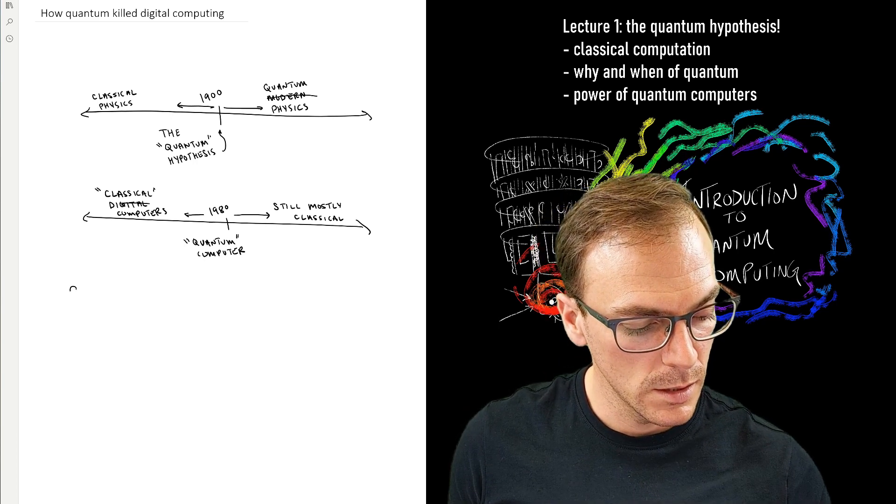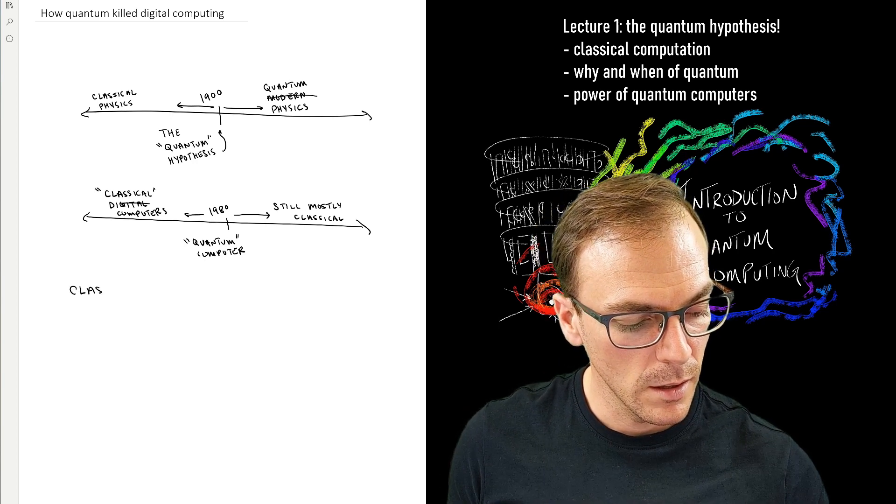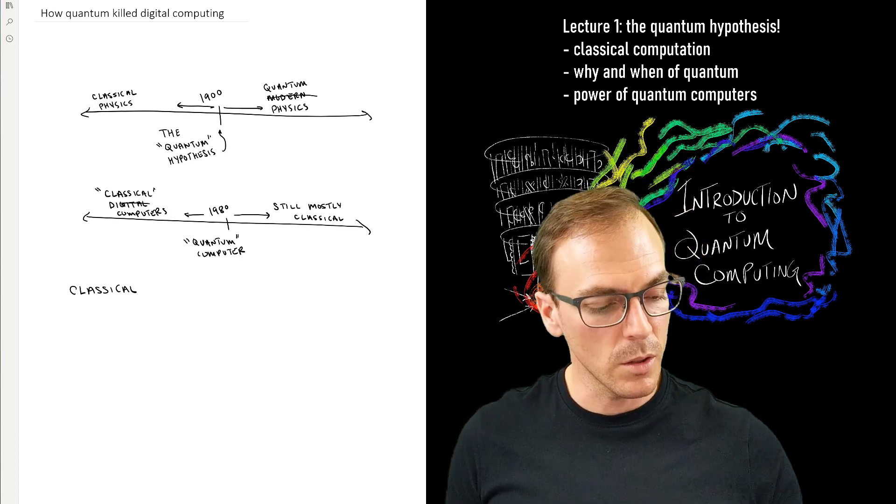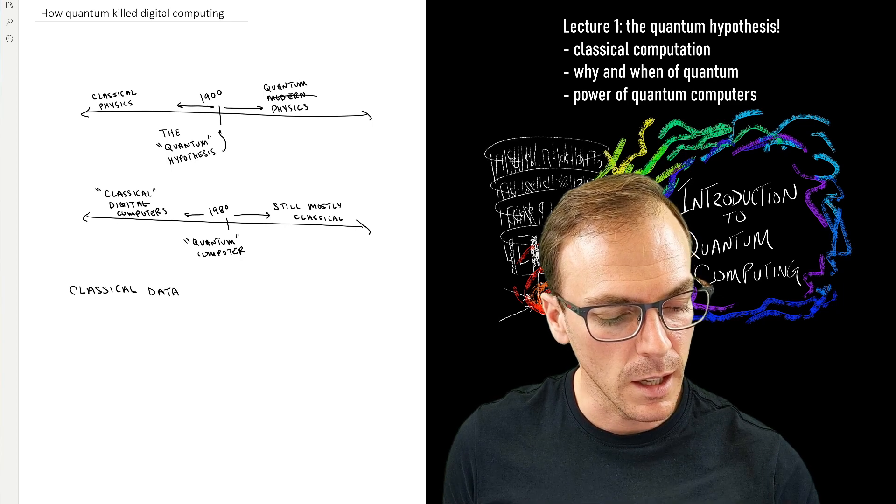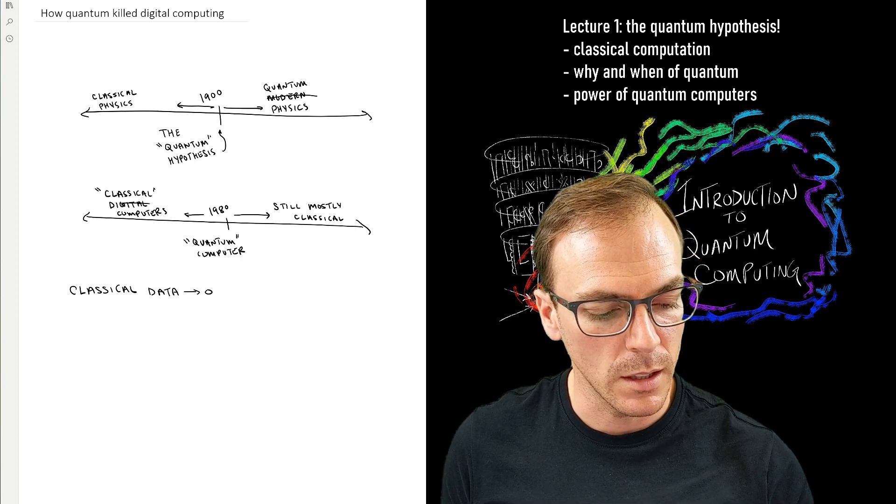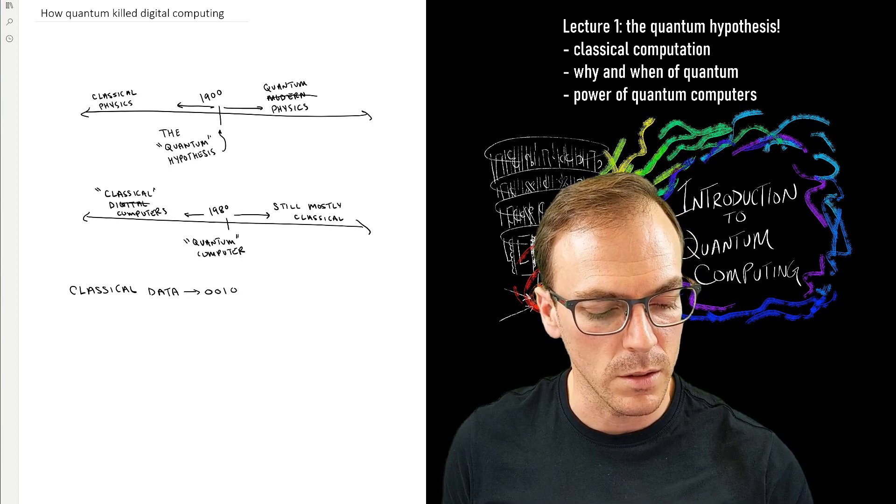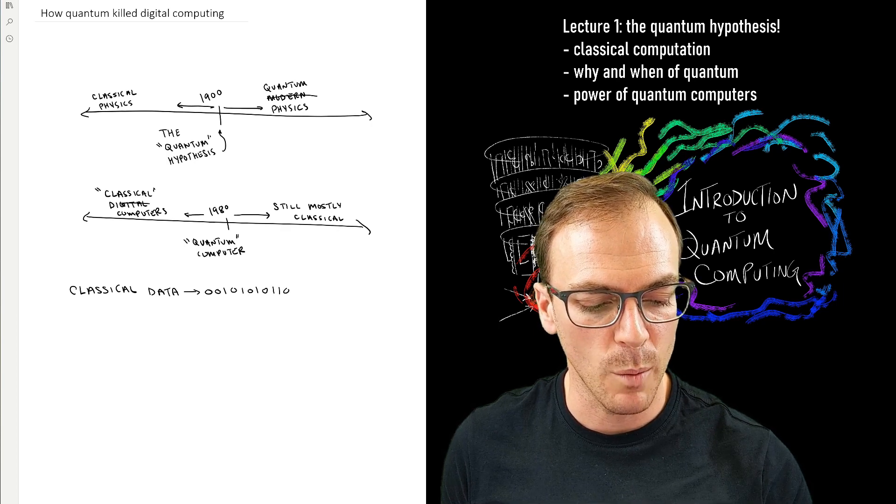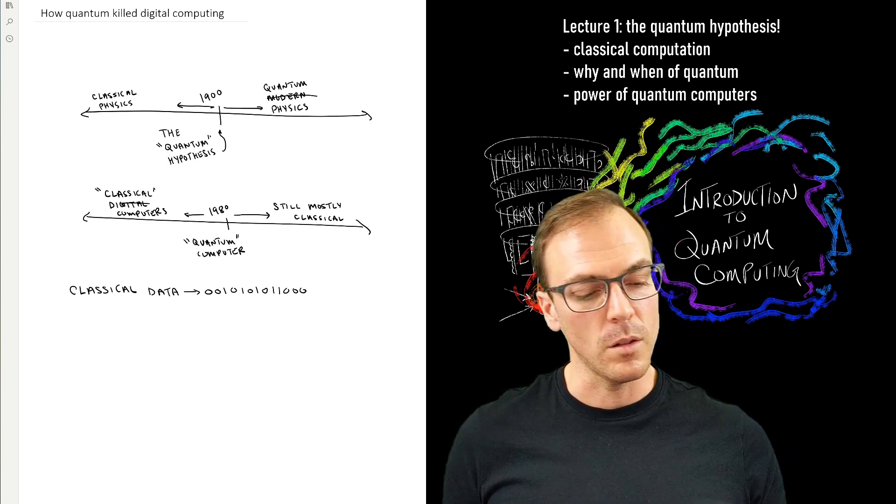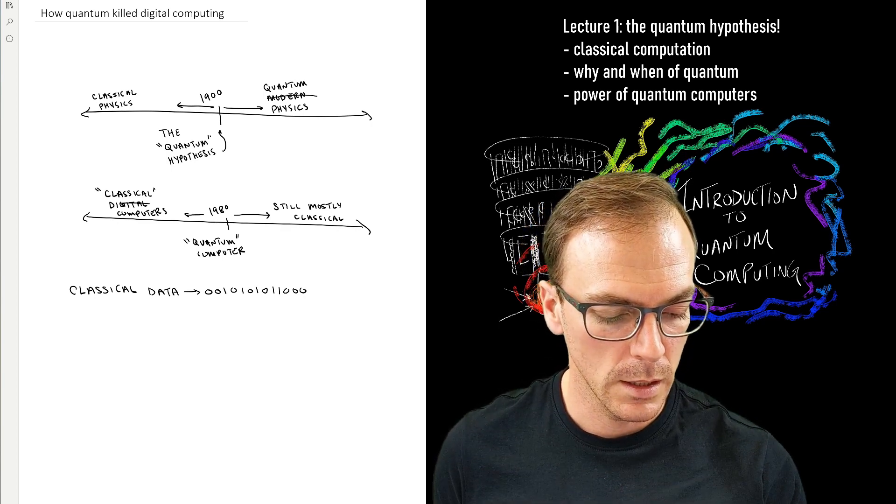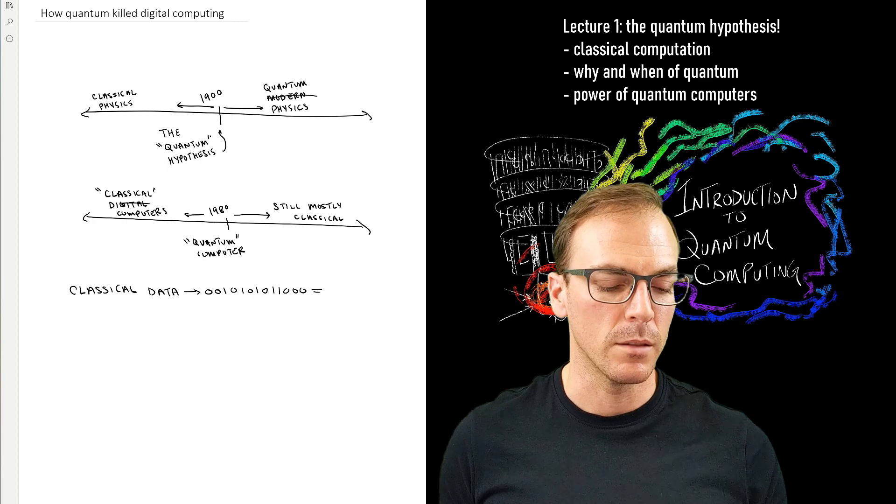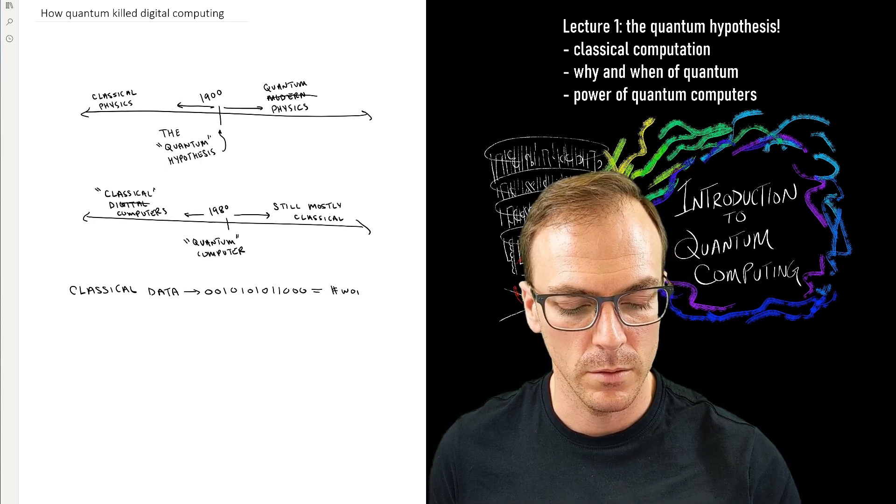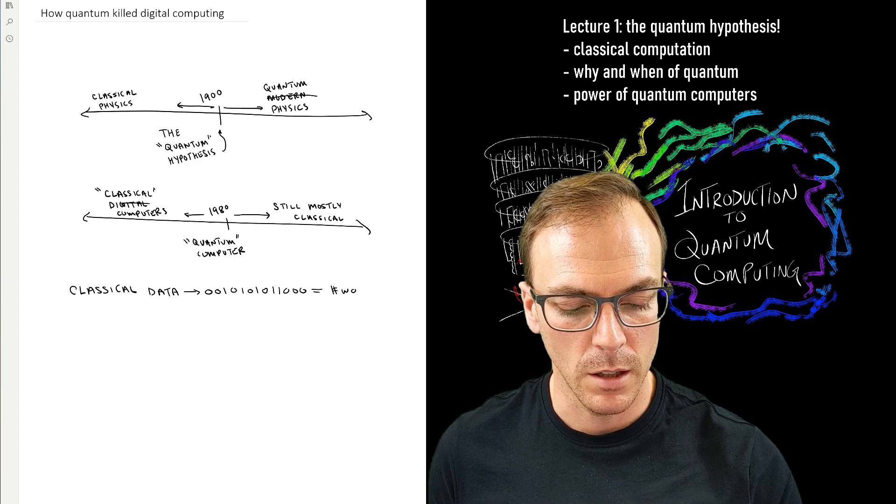Okay, so the data that is stored in our classical computers is then called classical data, and that is, of course, as you probably already know, just sequences of zeros and ones, or can be represented as such, and those are bits. So I have some bit string, maybe that's encoding representing, I don't know, some sort of tweet or TikTok video.